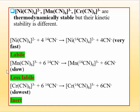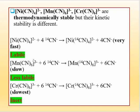For the manganese complex, the exchange of ligands is slow — not fast — so it is a less labile complex. And for the chromium cyano complex, the exchange of ligands is very slow, so this is a kinetically inert complex. You can see that all three complexes are thermodynamically stable, but their kinetics differ: Ni(CN)4 is labile, the manganese complex is less labile, and the chromium complex is inert.